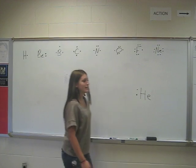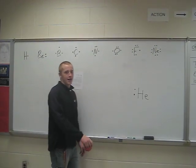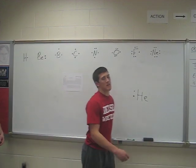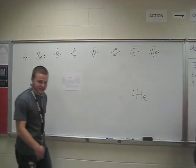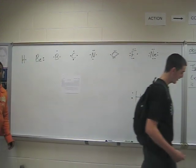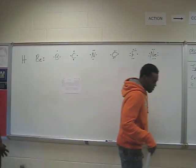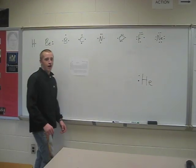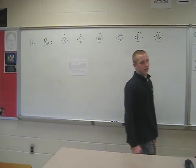Later when technology got better, it was determined that these atoms were not bound with other atoms because they had a full outer level of electrons. And most of the time a full outer level is eight valence electrons. So this was known as the octet rule which states that all atoms will bond with other atoms until it gets a full outer level of valence electrons which is usually eight.